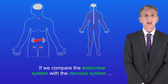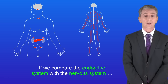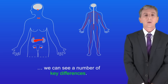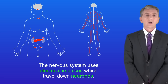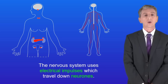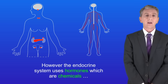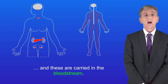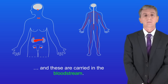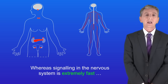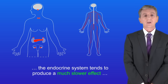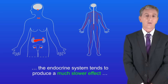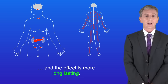If we compare the endocrine system with the nervous system we can see a number of key differences. Firstly the nervous system uses electrical impulses which travel down neurons. However the endocrine system uses hormones which are chemicals carried in the bloodstream. Secondly whereas signaling in the nervous system is extremely fast, the endocrine system tends to produce a much slower effect and the effect is more long-lasting.